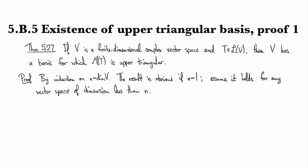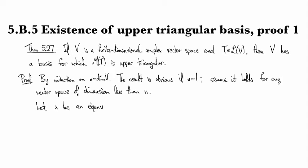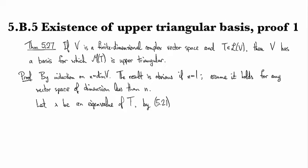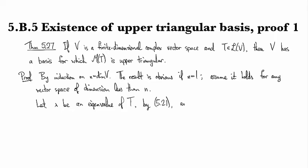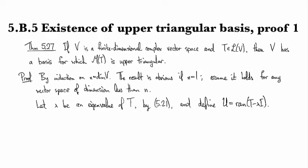Okay, let's let lambda be an eigenvalue of T, and we showed that this is okay, we proved that they exist back in 5.21. And we're gonna define the invariant subspace U which is the range of T minus lambda I.